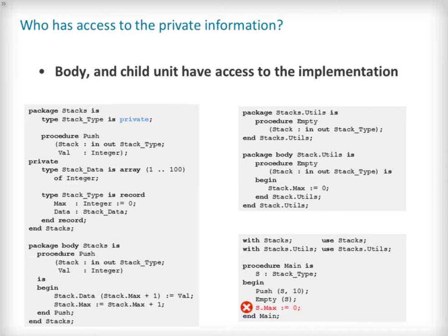Now we expand the question of who has access to the private section of a package specification. The answer is the package body and any child packages. In this example code we see a package stacks that defines a stack type private type and a procedure push that accepts a parameter of that type and an integer. In the private section of the package specification we see the implementation of stack type. The stacks package body can access the implementation of stack type and indeed directly accesses the record fields.